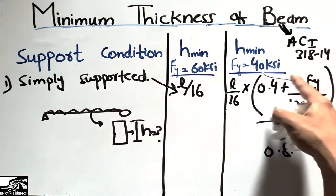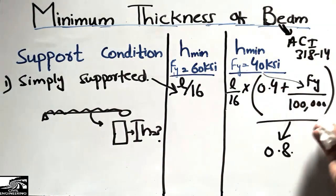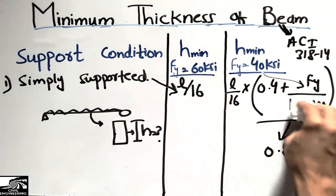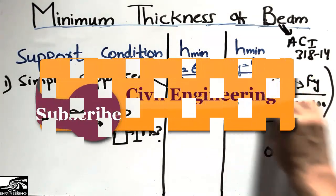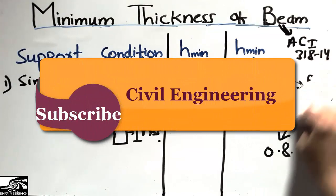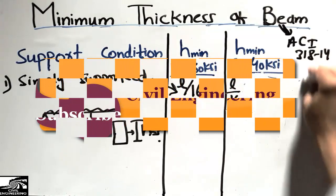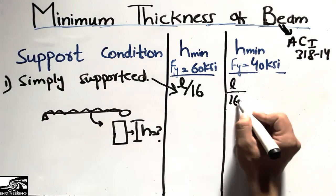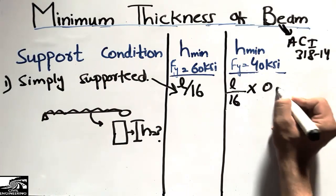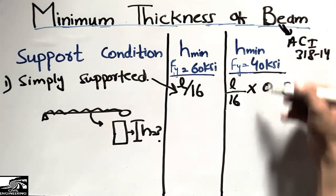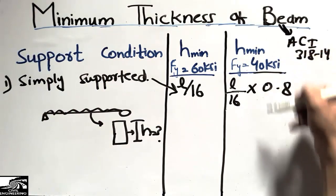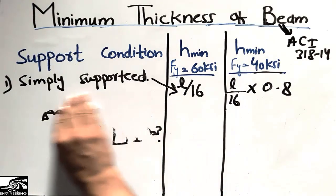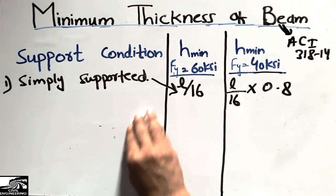This factor changes for different steel grades — for Grade 75 it would be different as well. So for Grade 40, we can simplify the expression to L/16 × 0.8 as the minimum depth formula.